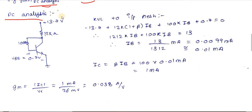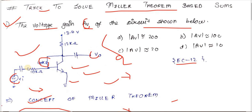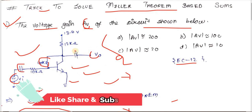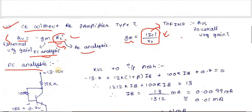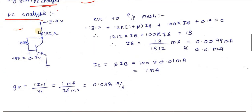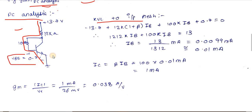With the DC circuit, we apply mesh analysis to find the base current Ib, then use Ic = β × Ib. Applying KVL to the input loop, and noting Vbe = 0.7 V (silicon transistor assumed by default), the KVL equation gives: −13.7 + (Ib + Ic)×12k + 100k×Ib + 0.7 = 0.